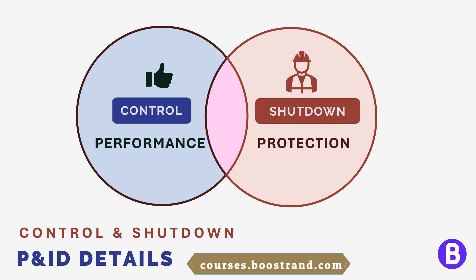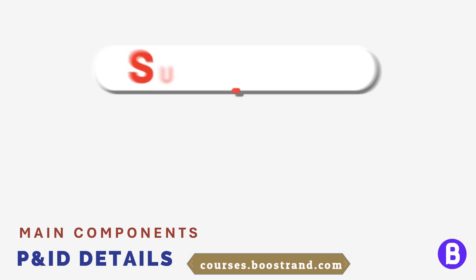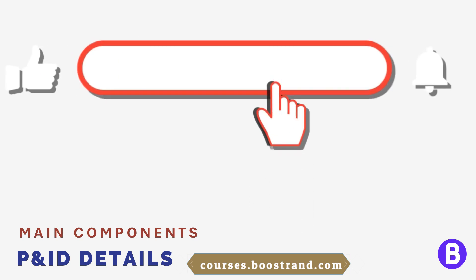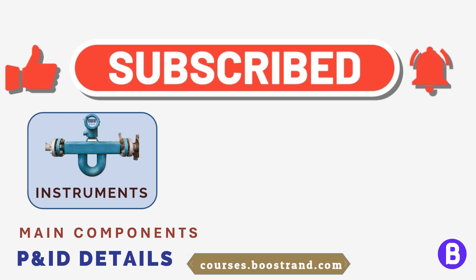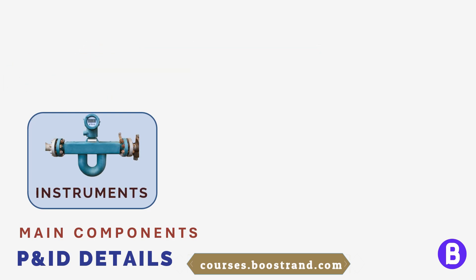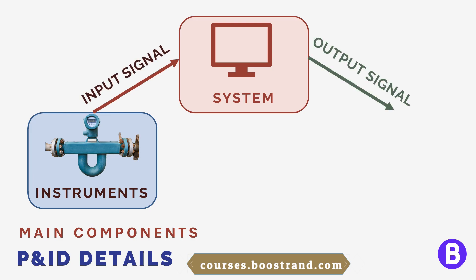While ensuring the safety of assets and personnel, the anatomy of a control loop or a shutdown function consists of three main components. The first component is the instrument, which is the device that takes the reading from the plant. The second is the processing system, which can be the control system or the shutdown system, that takes the reading from the instrument through an input signal and based on that signal gives an output signal.